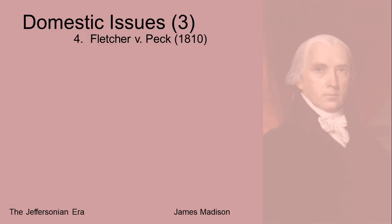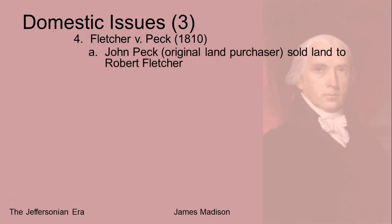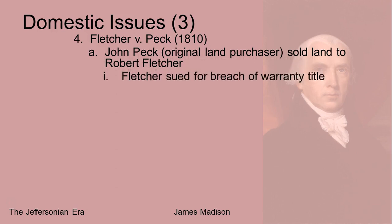The case is called Fletcher v. Peck. John Peck was one of the guys in the original land deal at 1.5 cents an acre, and he had turned around and sold it to a guy named Robert Fletcher. Fletcher sued Peck for breach of warranty title — meaning Peck, when he sold the land to Fletcher, was saying he owned it free and clear. But because of what the Georgia legislature had done, he technically didn't own the land free and clear. That's what Fletcher is suing over — the fact that there is a problem with the title, because technically Fletcher would not own the land either.